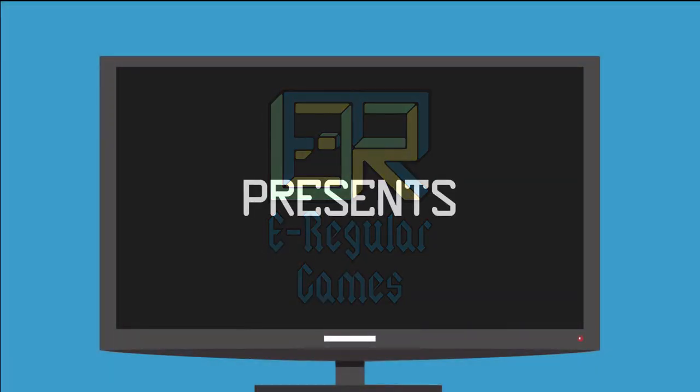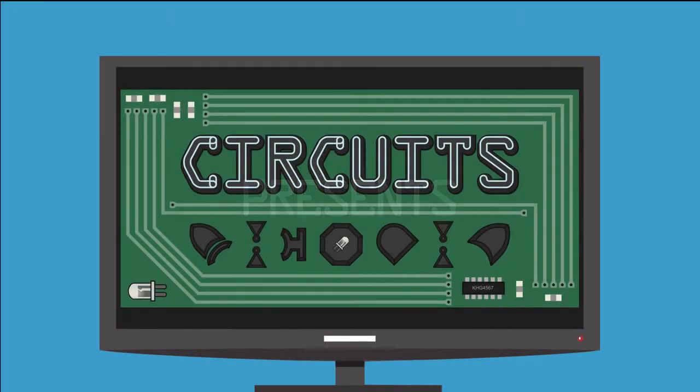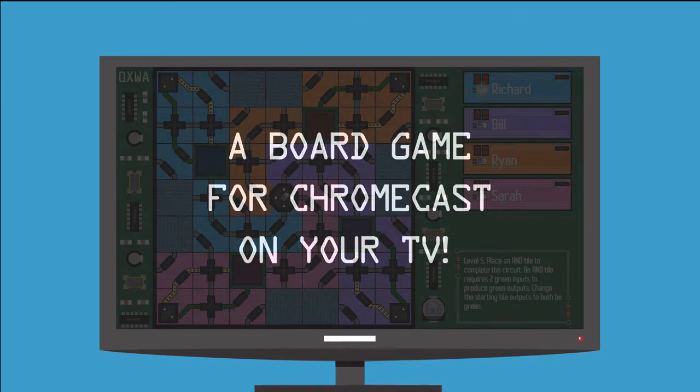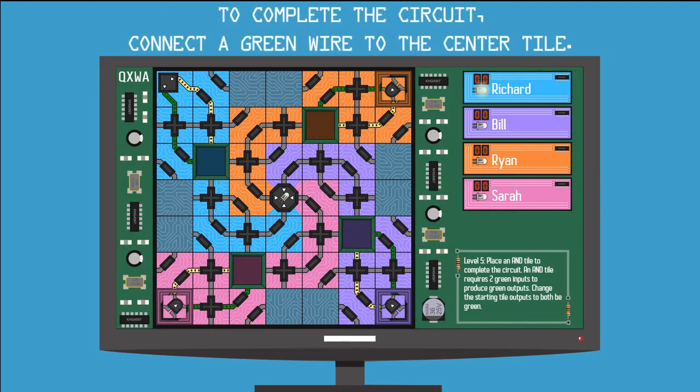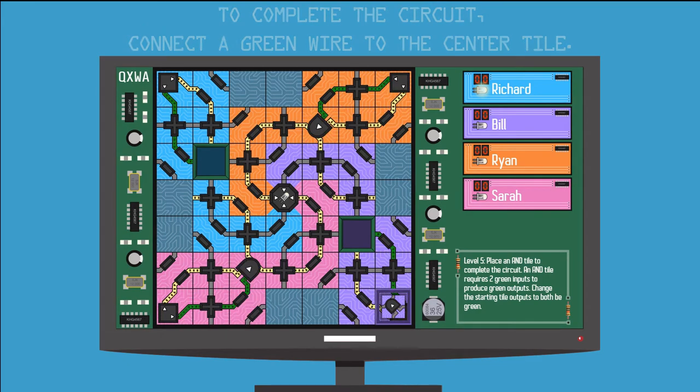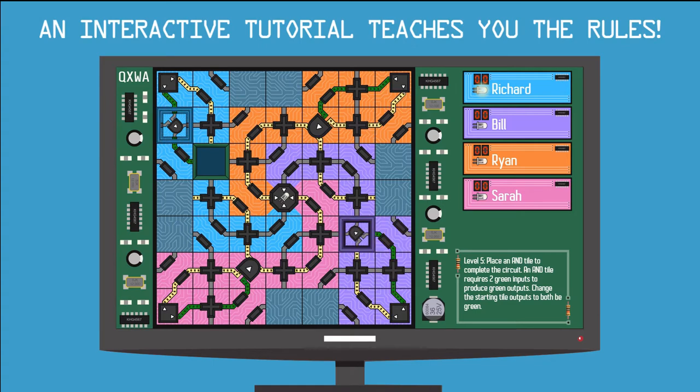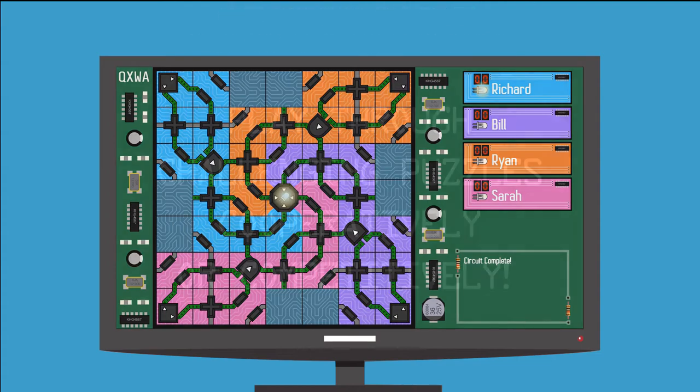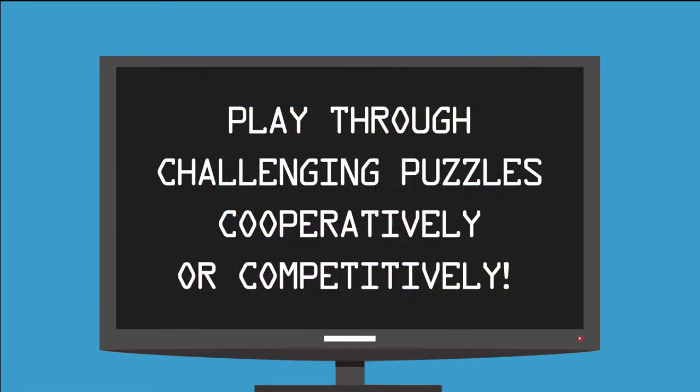Irregular Games presents Circuits, a board game for Chromecast on your TV. To complete the circuit, connect the green wire to the center tile. An interactive tutorial teaches you the rules. Once you know the rules, play any of four game play modes—play through challenging puzzles cooperatively or competitively.